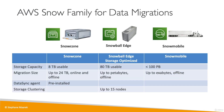As a summary for data migration, we have three options: Snowcone (8 terabytes), Snowball Edge (80 terabytes), and Snowmobile (100 petabytes). AWS recommends Snowcone for up to 24 terabytes, Snowball Edge for up to petabytes (offline), and Snowmobile for up to exabytes. DataSync Agent is pre-installed on Snowcone so you can plug it to a network and have DataSync send data over the network to AWS. For Snowball Edge, you can do storage clustering, putting up to 15 Snowball Edges together to increase storage size.